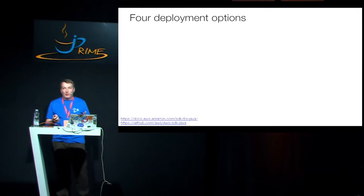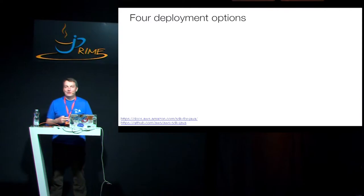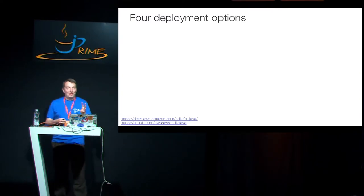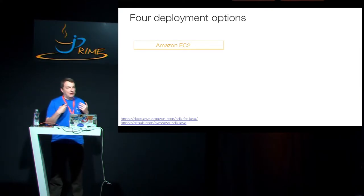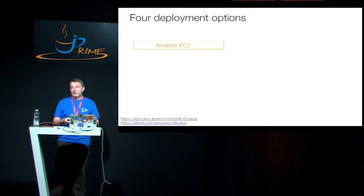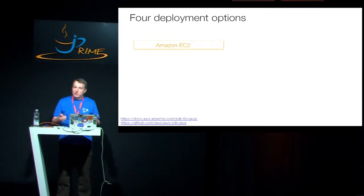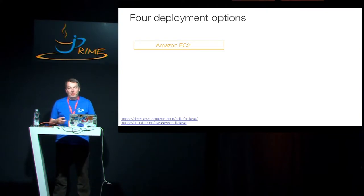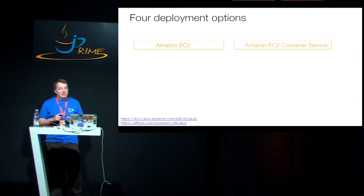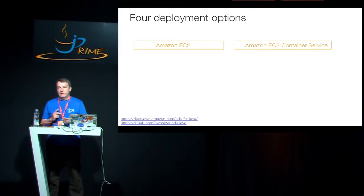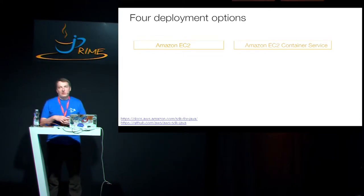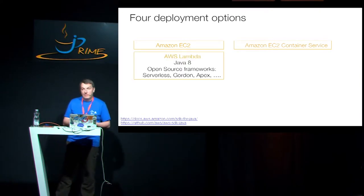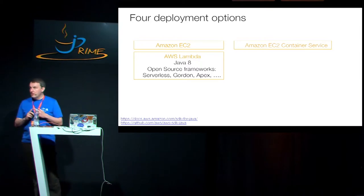We have four deployment options on AWS. The first one is Amazon EC2 — virtual machines. You start virtual servers, connect to them, and manage them. You can choose all different sizes, shapes, and configurations. The second way is to use ECS, the EC2 Container Service, for Docker applications — it allows you to run and schedule containers across multiple Docker instances. The third one is AWS Lambda and the so-called serverless architecture. With Lambda you can do different languages, but specifically for today you can do Java 8.